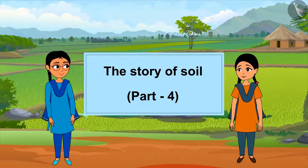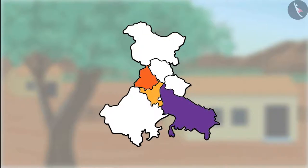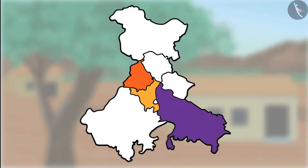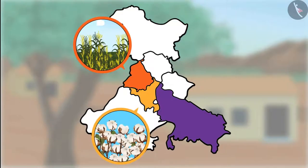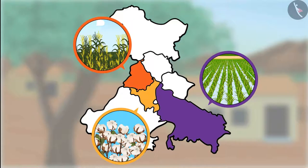The story of soil, part 4. Hello children, how are all of you? I had gone on a journey in a train and saw a few northern states of India like Punjab, Haryana, and Uttar Pradesh. The diversity in languages is similar to the different types of soil found in the region. The green fields of Punjab, the cotton fields of Haryana, and the rice fields of Uttar Pradesh were all wonderful. Let us find out about it with the characters of this video, Nilu and Minu.